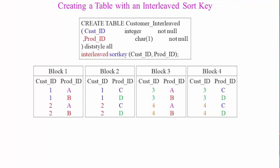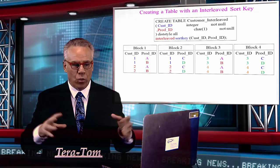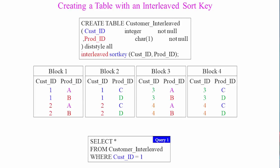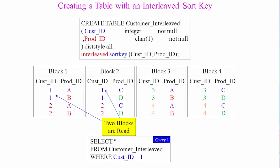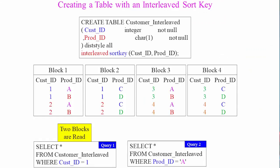when we run queries that say, select everything from the customer interleaved table, where cust ID equals one, there are two blocks read now. Before, we only did one, but there is a little more done now. But when we say, select everything from customer interleaved, where prod ID equals A, only two blocks are read. That's the idea behind an interleaved sort key.